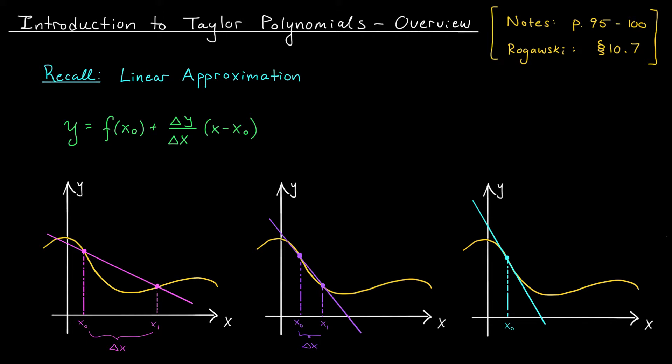that line roughly models the behavior of my function over this small interval. The equation of that line was given by something like this: y equals f(x_0) plus the slope of the line, Δy over Δx, times (x - x_0). Of course,